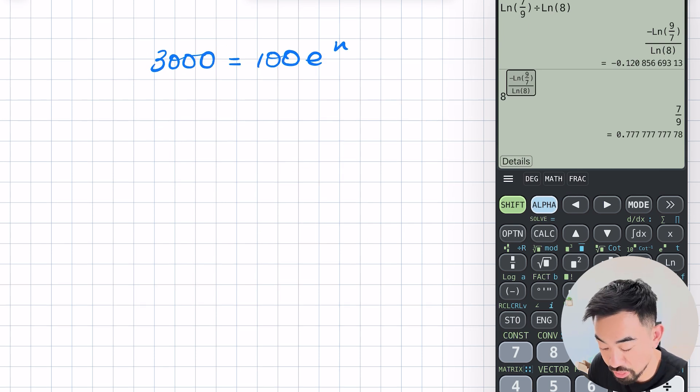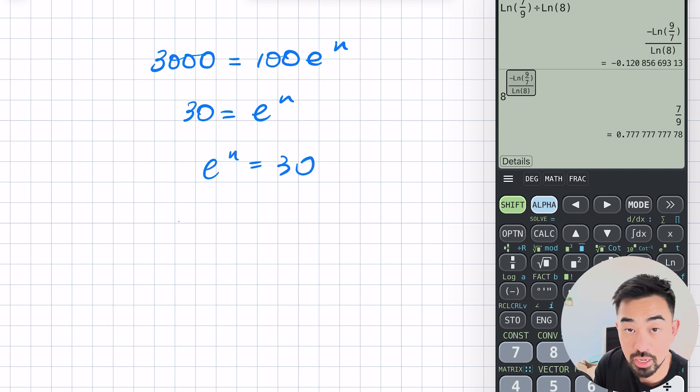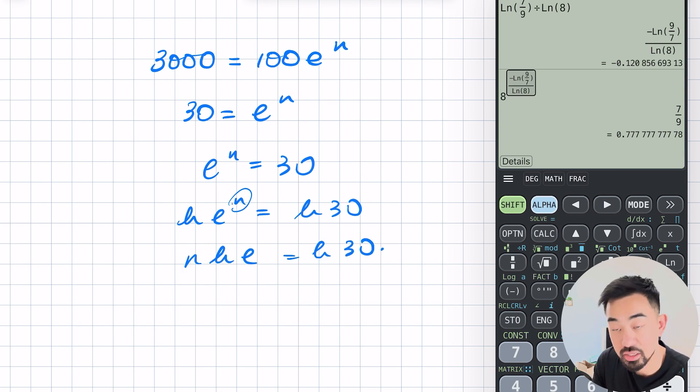All right let's have a look at this example here. We've got 3,000 is equal to 100 e to the power of n. Okay so e is just the Euler's number but we're just going to treat it like a regular number. I'm trying to find out what n is equal to. So what I need to do is divide both sides by 100 first to get rid of that. 3,000 divided by 100 is 30. So 30 is equal to e to the n. Now I'll just switch it around to make it a bit easier to read. Once again log both sides whenever you're trying to find the power. Bring the n down using the power law.